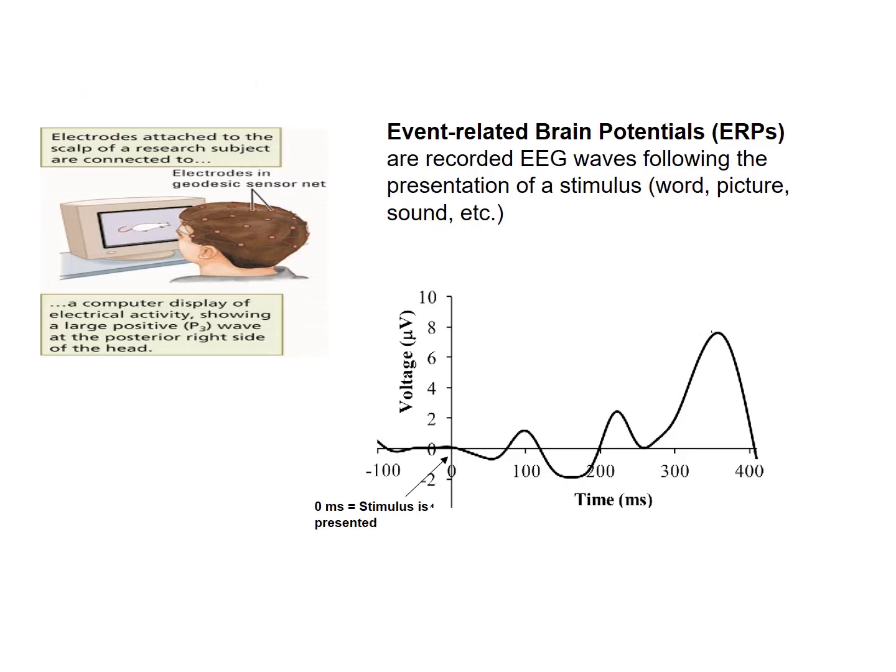Researchers have used EEG to study how the brain responds to events. In this kind of research setup, it is called event-related brain potential recording. A participant would be seated in front of a visual screen and shown an object, and recording of the brain waves occurs as soon as the object is presented. Using this technique, researchers can see that the brain responds to stimuli as soon as 100 milliseconds following its presentation — that's within one-tenth of a second.